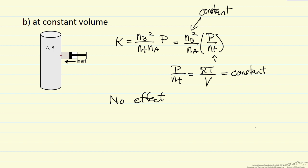There is no effect on equilibrium when we add an inert at constant volume. The partial pressures of A and B remain the same. Remember, our equilibrium expression is pressure of B squared over pressure of A. Adding an inert at constant volume increases total pressure, but does not change those partial pressures — therefore there's no change and equilibrium is still satisfied. The situation is very different between constant volume and constant pressure.